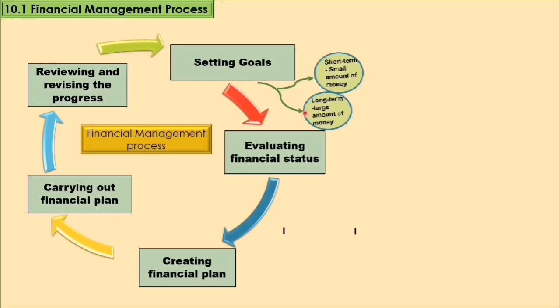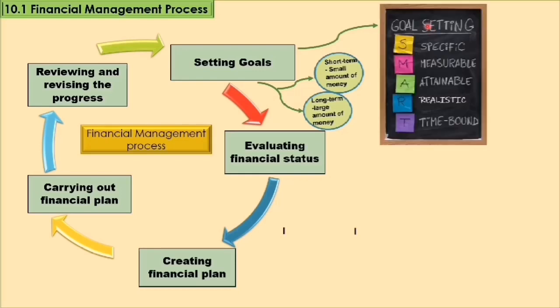Setting clear financial goals is the most important aspect in financial planning. Financial goals set based on the SMART concept will help us control our spending in order to achieve the desired financial goals. The five key components are: S - Specific, M - Measurable, A - Attainable, R - Realistic, T - Time-bound.